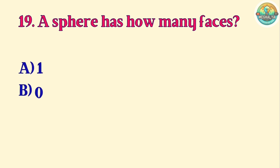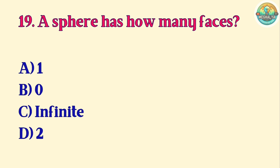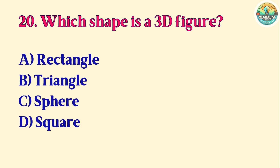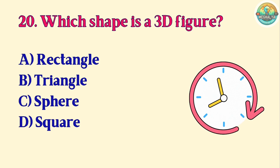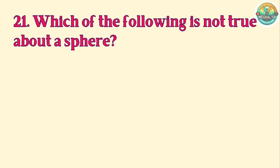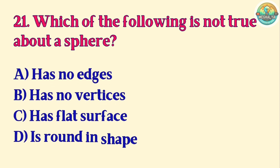Sphere. Question 19. A sphere has how many faces? A. One. B. Zero. C. Infinite. D. Two. Correct answer is A. One. Question 20. Which shape is a three-dimensional figure? A. Rectangle. B. Triangle. C. Sphere. D. Square. Correct answer is B. Triangle. Question 21. Which of the following is not true about a sphere? A. Has no edges. B. Has no vertices. C. Has flat surface. D. Is round in shape. Answer is C. Has flat surface.